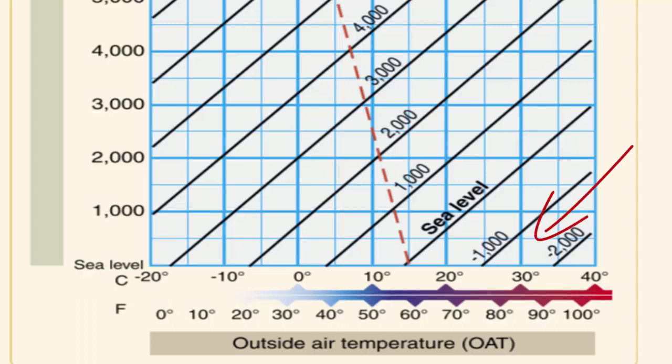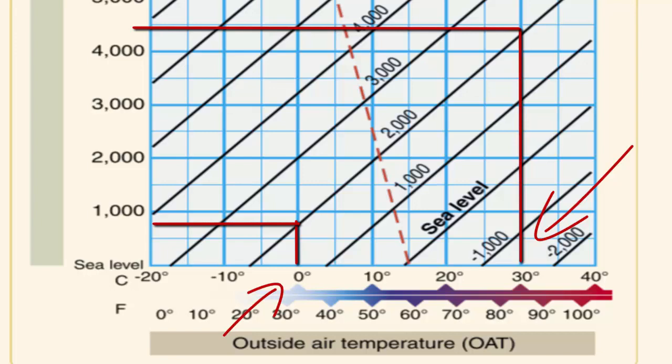Increasing the temperature of air decreases its density. Conversely, decreasing the temperature increases its density. Therefore, the density of air varies inversely with the temperature. This statement, again, is only true at a constant pressure.